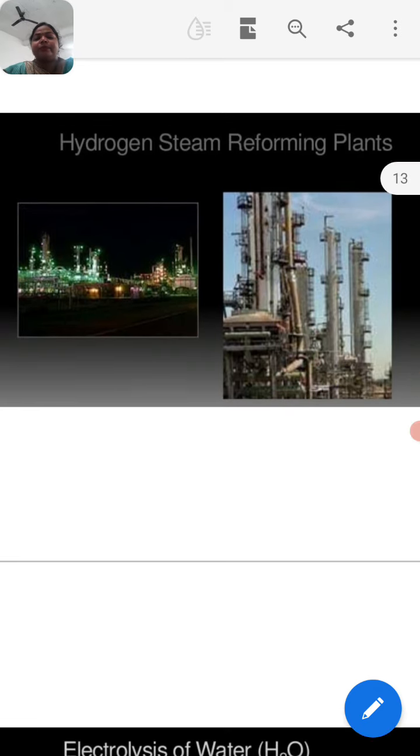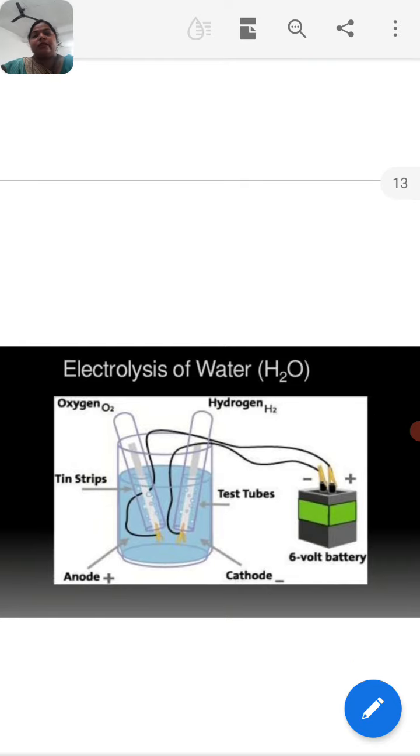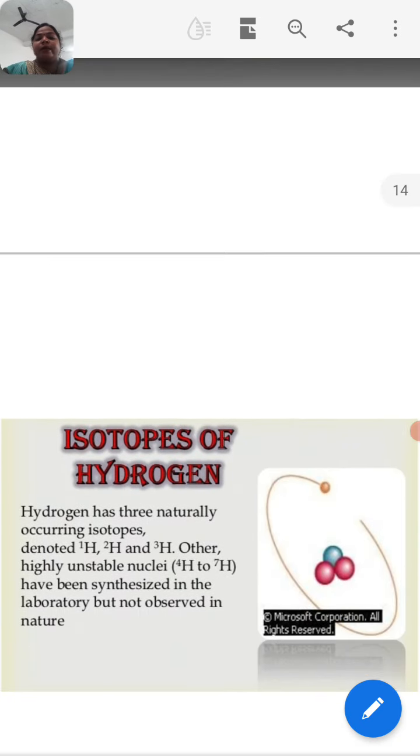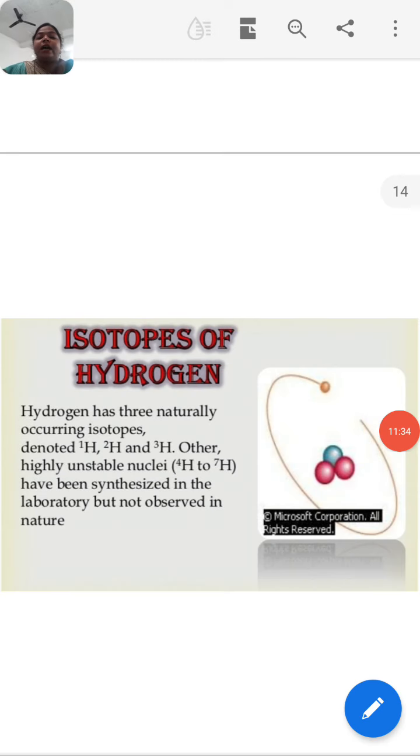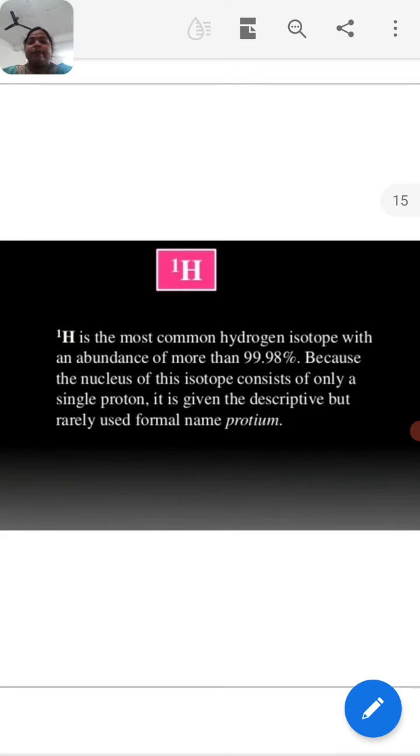Now hydrogen steam reforming plants. Electrolysis of water was already studied in 10th standard chapter number 1. This process is completed by 6 volts of battery.